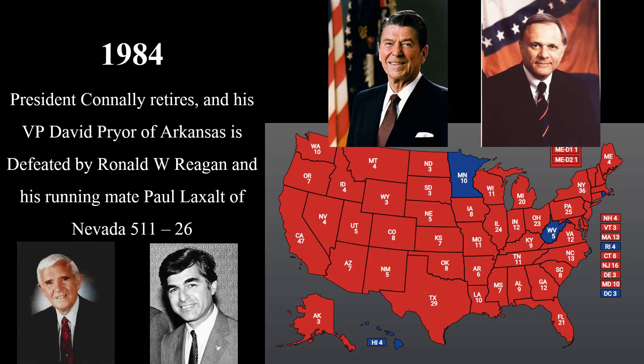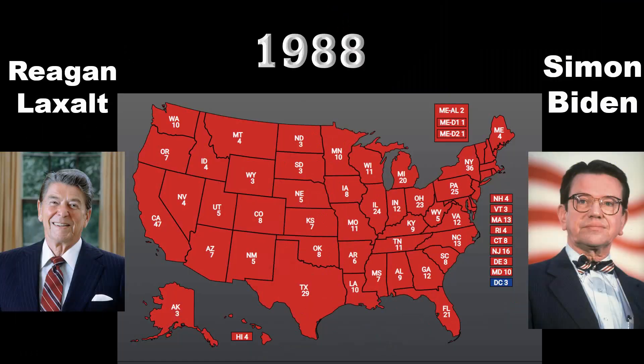For the Vice Presidency, Senator Paul Laxalt of Nevada defeats Governor Michael Dukakis of Massachusetts. It is one of the biggest landslides in history. And in 1988, Reagan wins a second landslide against Senator from Illinois Paul Simon and his running mate, Delaware Senator Joe Biden. Many credited Reagan's victory to his ability to put a victorious end to the Iran-Iraq war, with the Iraqis victorious. He could also thank a booming economy and the apparent collapse of the Soviet Union.